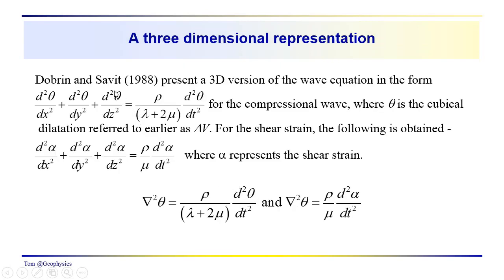I'll briefly note a presentation by Dobrin and Savit, who developed a 3D version of the wave equation. Note that this θ referred to in this relationship is the cubical dilatation, or εₓ + εᵧ + εᵢ that we mentioned in the last video. That's basically our ΔV. So we're looking at the second spatial derivative of the volume changes in the x, y, and z directions. For a compressional wave, we come up with a constant which is ρ/(λ+2μ) times the